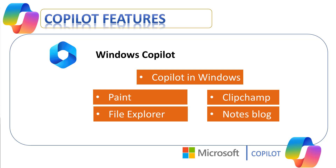With nearly 150 new features, Microsoft has released a new update to deliver a better AI experience including Co-Pilot in Windows, Paint, Clipchamp, File Explorer, and NoteBlocks. Co-Pilot in Windows helps you create faster, easily complete tasks, and lowers the cognitive load on the user, making complicated tasks simple.